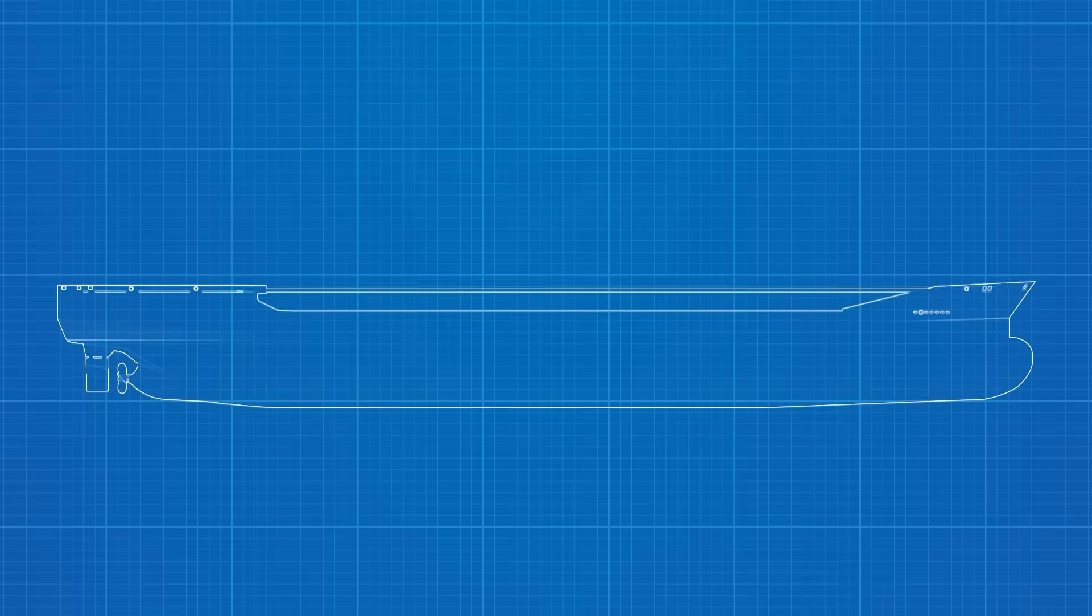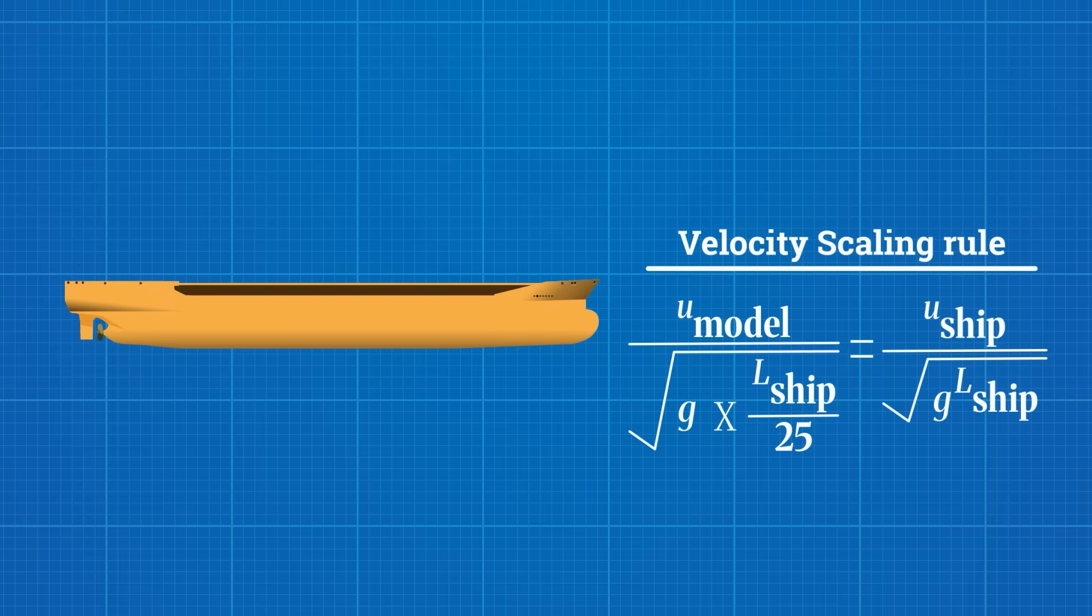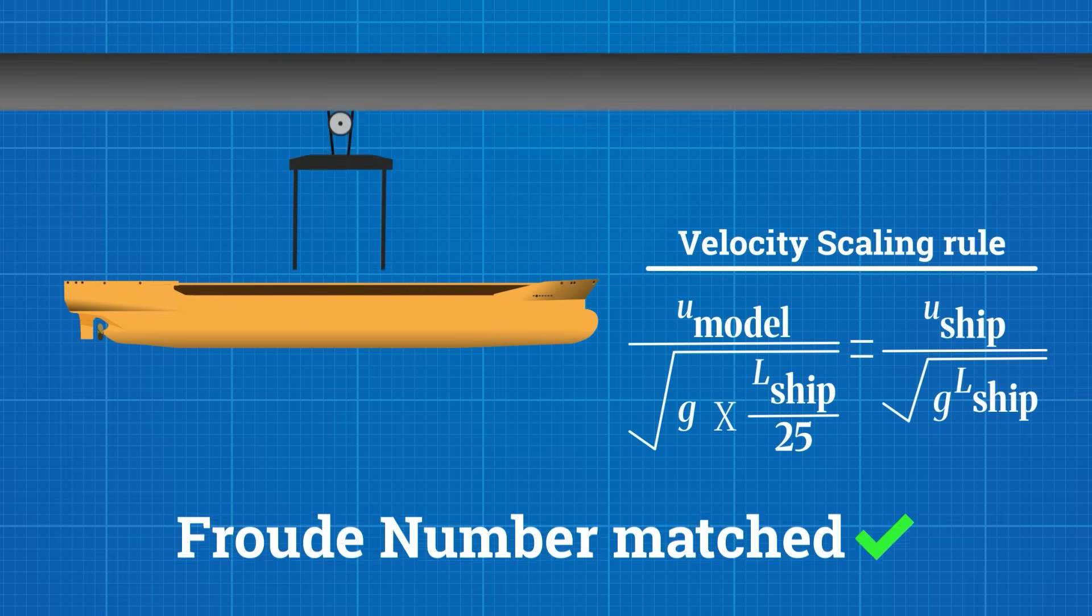Then comes the model. If it's, say, 1/25th the length of the real ship, the velocity must scale accordingly. Once the Froud number is matched, the model's speed is set.